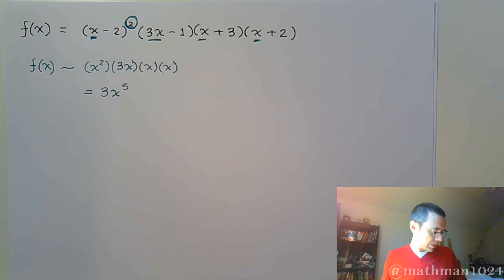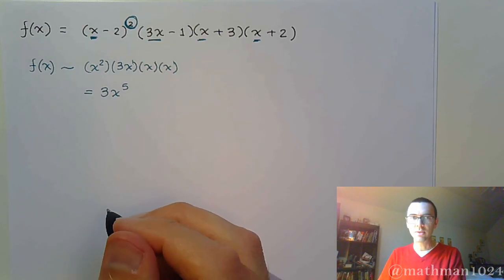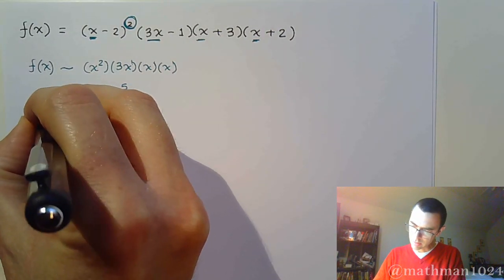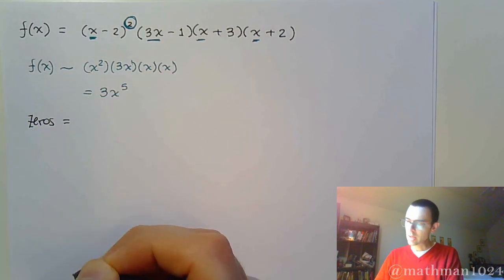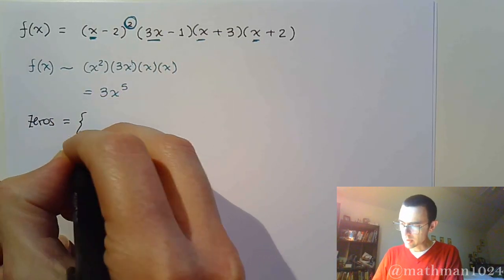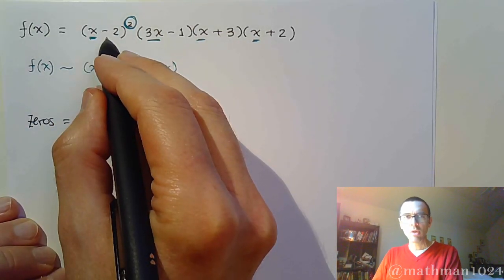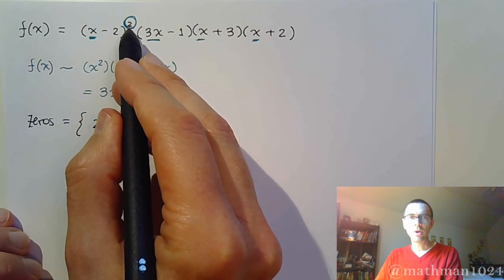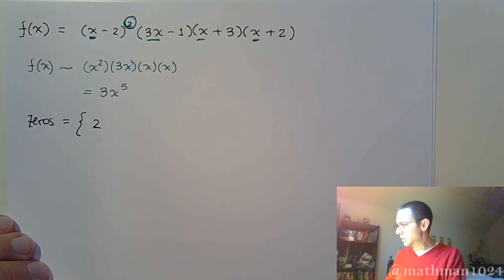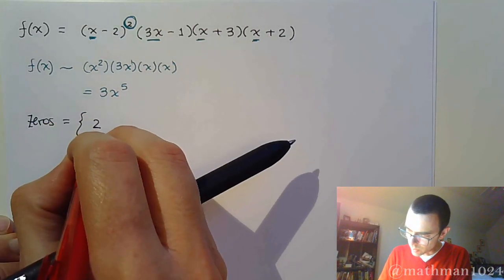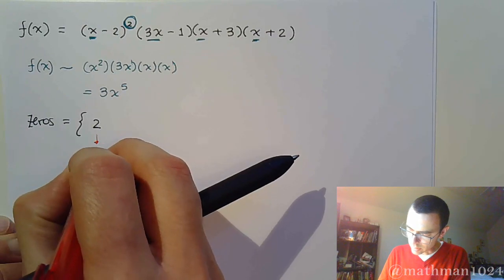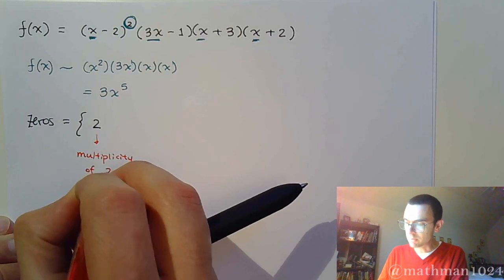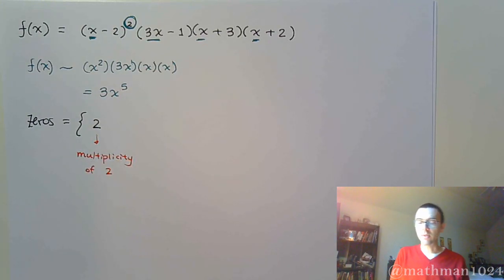All right, so like we did in the last problem, let's identify the zeros. So the zeros, you have, well this is kind of interesting. From this factor, x would equal negative 2. But notice that it has a power of 2 here. So I'm going to make a little note here that it's 2, but it has what we call a multiplicity of 2 because of that power of 2 that's on that factor.